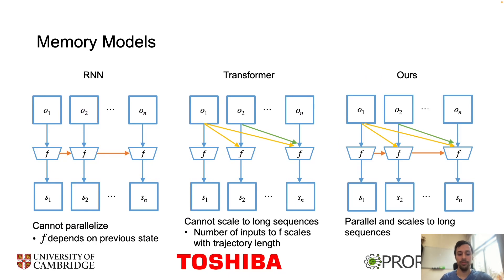Our proposed model has equivalent recurrent and parallel formulations, meaning we get the best of both worlds. We can be efficient during training, computing all outputs in parallel in a single forward pass. We can also run recurrently over very long sequences, using constant space and time for output. This is important for inference.